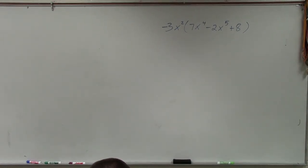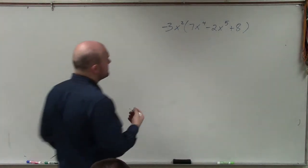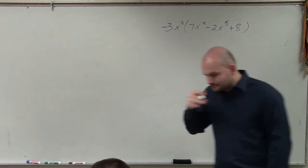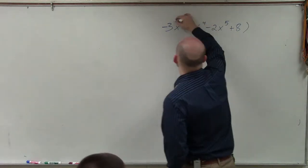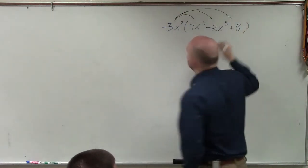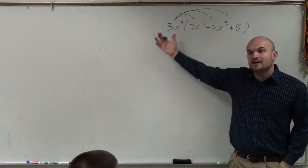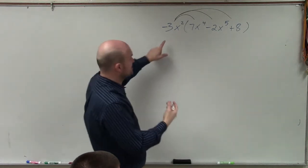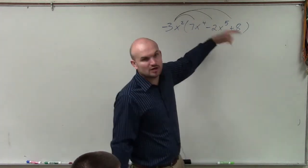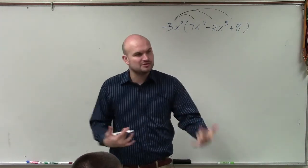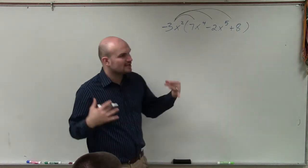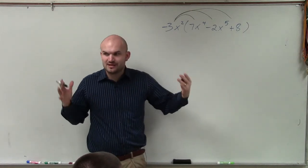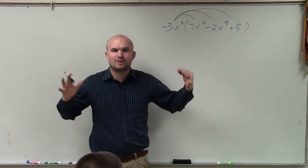All right, so the way that the box method basically works—if you guys remember in Algebra 1, Algebra 2, you talked about applying the distributive property, right? Whenever you have a term or an expression outside of another expression, you have to multiply every single term by every single term, correct? That was the distributive property. However, we're going to start getting into some multiplication that's going to be pretty difficult to remember where everything is at.